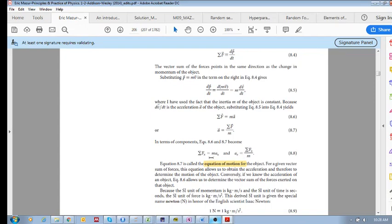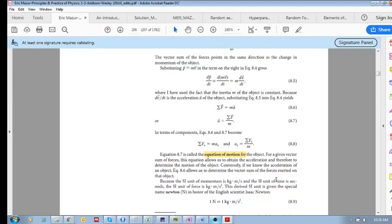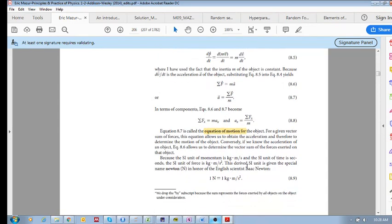So this is called the equation of motion, section 8.7. Basically, if we have the acceleration, then it's possible to determine the vector sum of forces. And if we have the vector sum of forces, we are able to determine the acceleration.